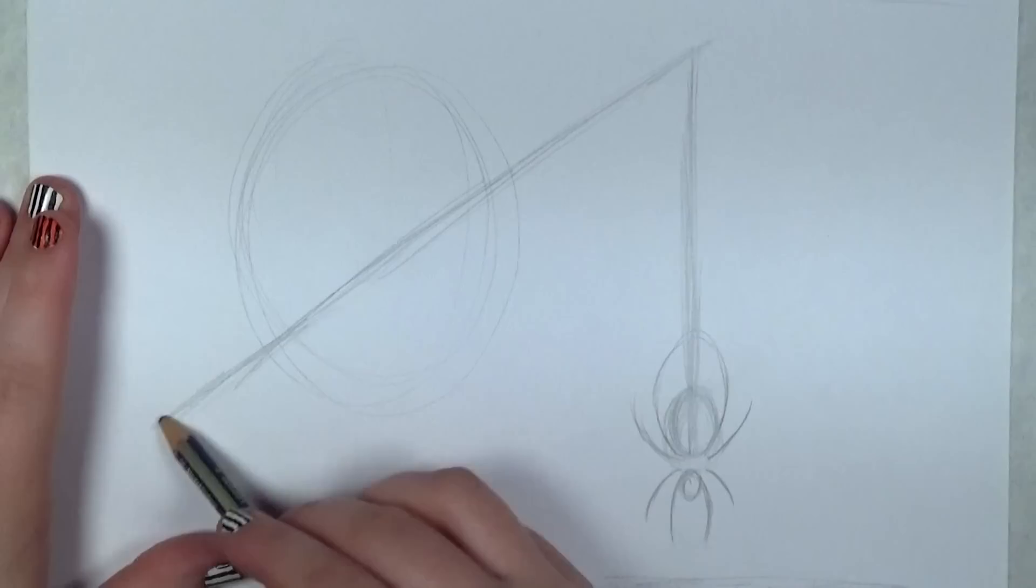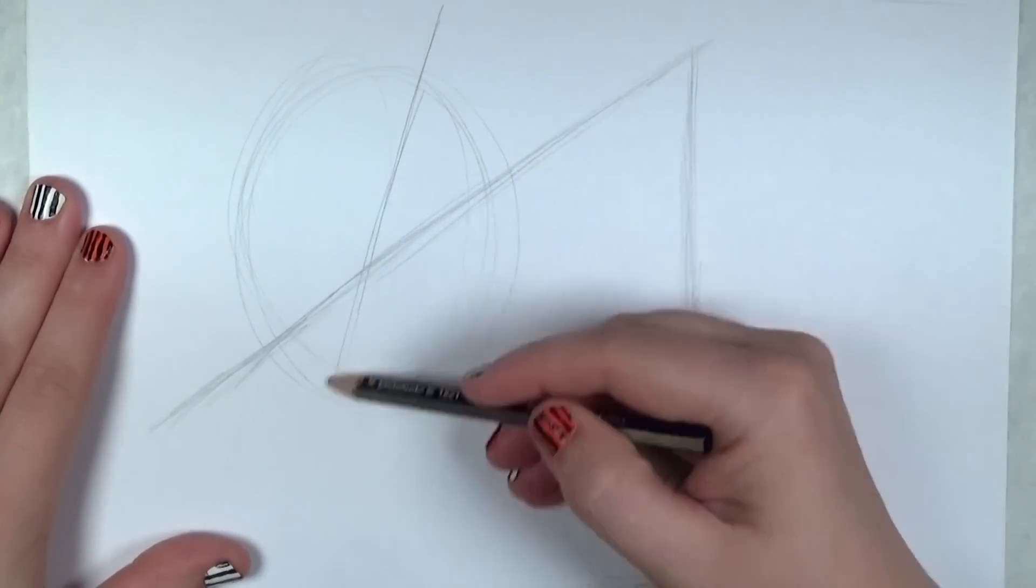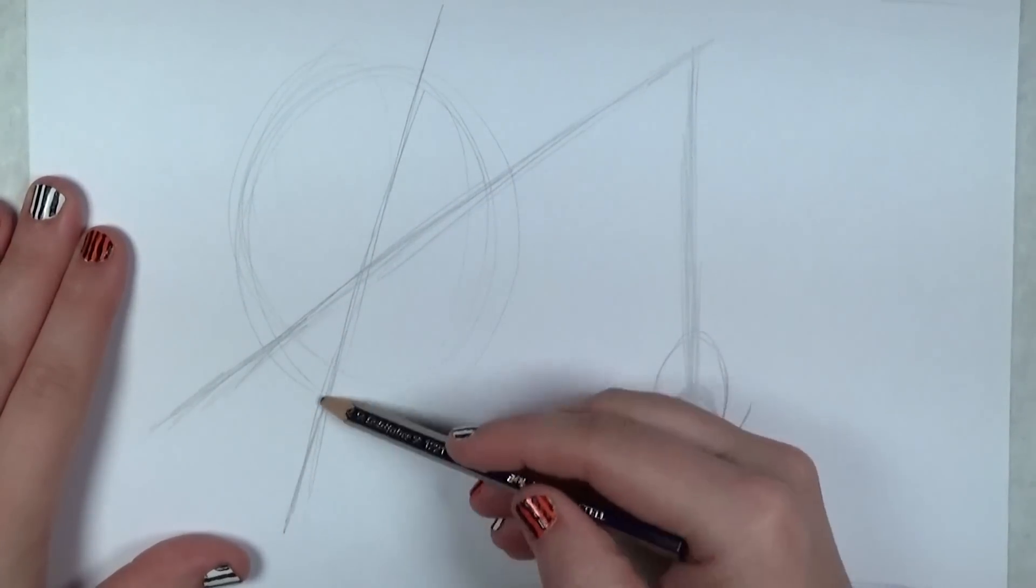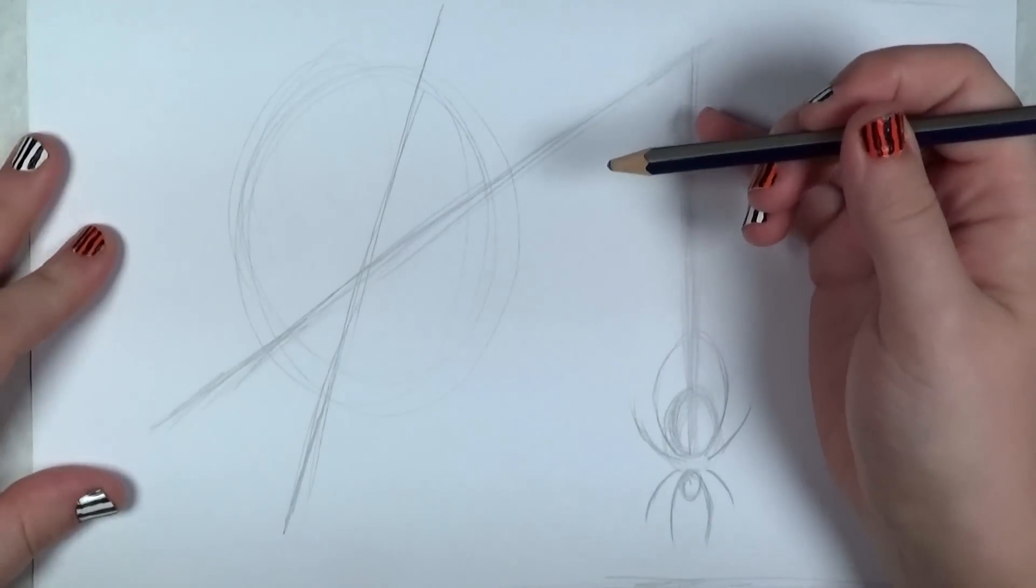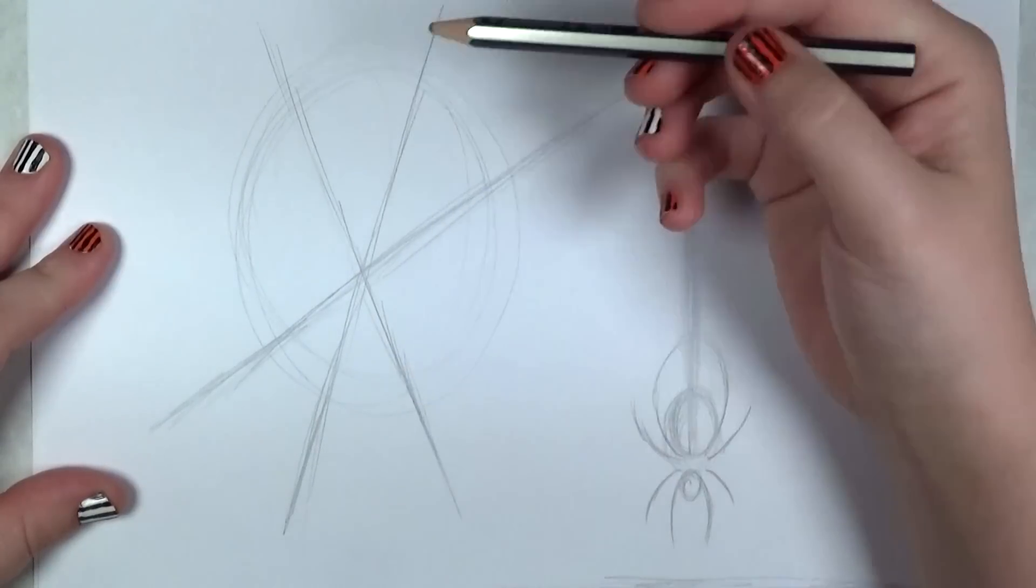Now I'm going to start building the spider's web. I'm doing this as an oval shape instead of a perfect circle because I found it to be much more interesting that way.